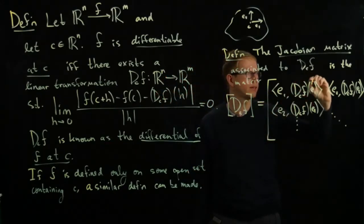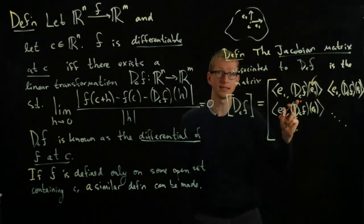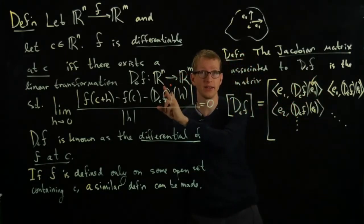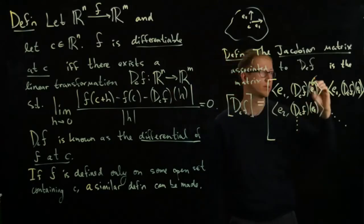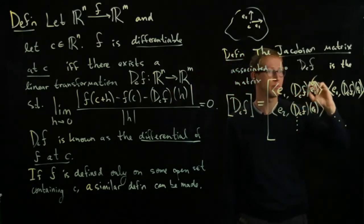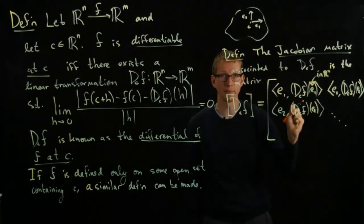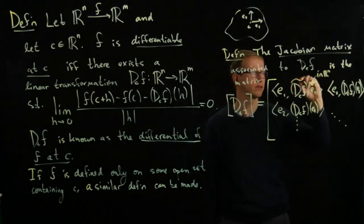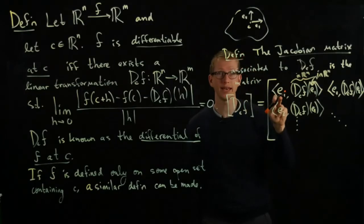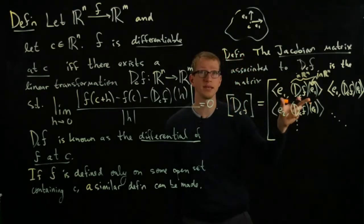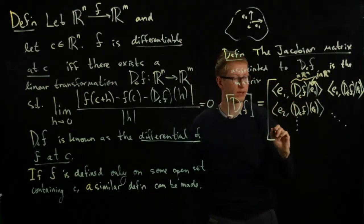And let's make sure that we actually get an M by N matrix with these subscripts. So here, this E is an element of R^N, the domain of this differential. And this element, after we apply the linear transformation, gives us an element in R^M. So after we do this, this is in R^M.